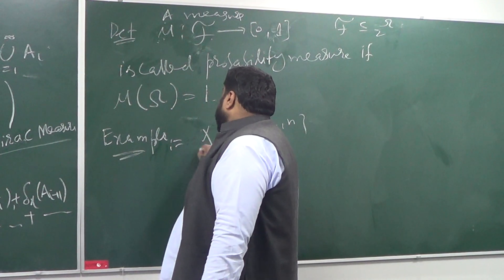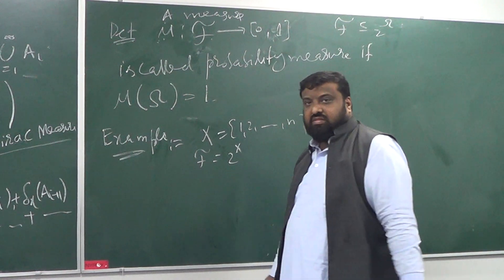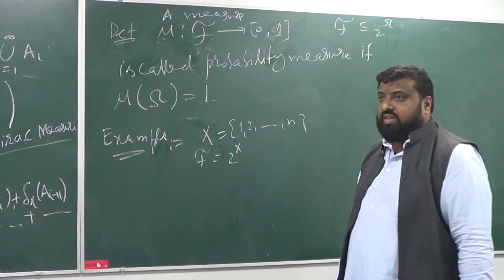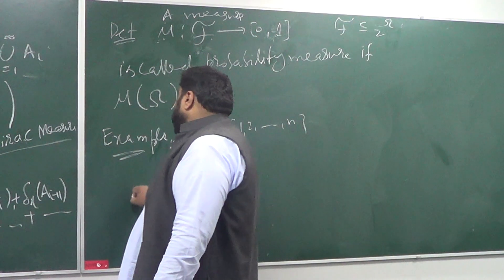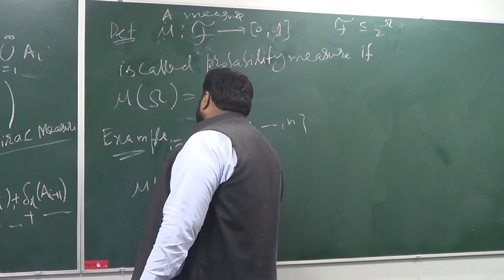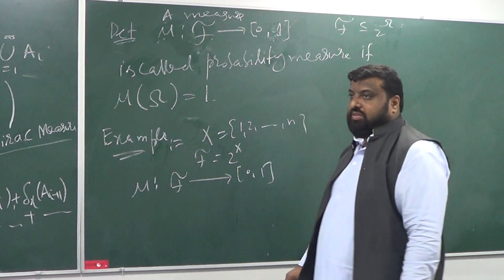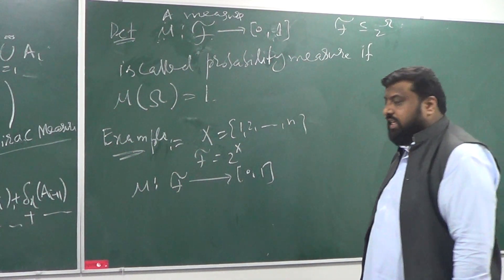And take F to be the power set of X, collection of all events, and take mu to be a map from the events to the number, from 0 to 1, such that...